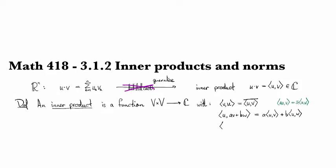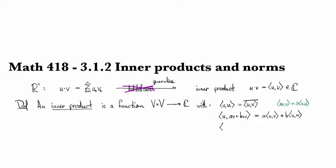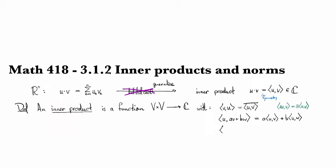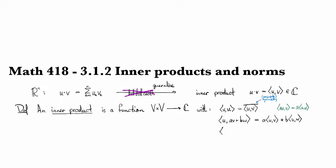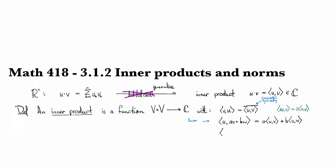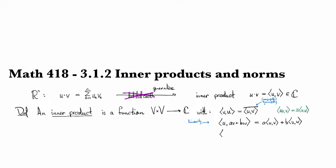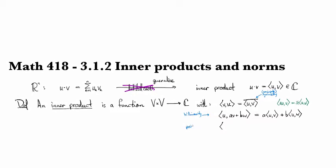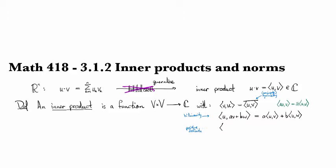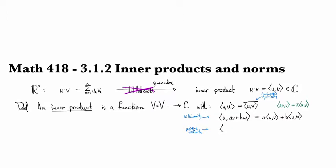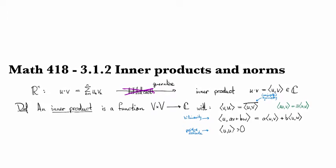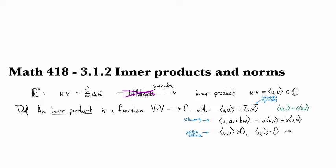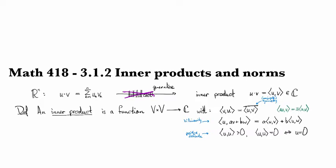The last thing that it requires - actually let me just write down the names for these. So this is called symmetry, or conjugate symmetry. And then this one is linearity, or since it's linear in each slot, bilinearity. And then this last one is called the positive definite property. And it requires that the inner product of anything with itself is non-negative. That's the positive part. And then the definite part is that if you get zero, this happens only for the zero vector. So it gives you a way to sort of identify zero.